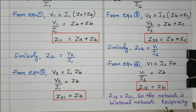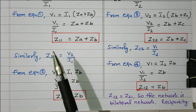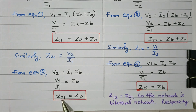Since Z12 = Z21, the network is a bilateral network — a reciprocity network. We calculated the Z parameters for the given network by framing four equations: two by keeping the output port open and two by keeping the input port open. From these four equations we calculated Z11 = ZA + ZB, Z22 = ZB + ZC, Z21 = ZB, and Z12 = ZB. It is also concluded that this is a bilateral, reciprocal network. Subscribe the channel for more videos and notifications. Soft copy of this material is available in the drive; the link is given in the description box. Thank you for listening.